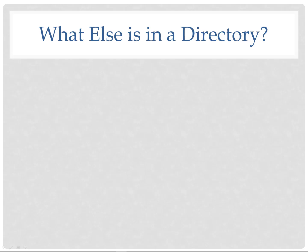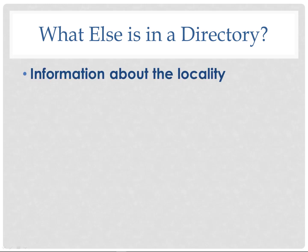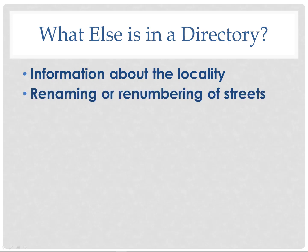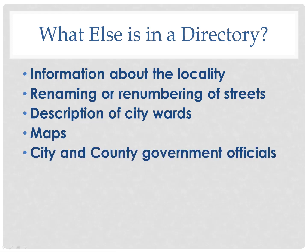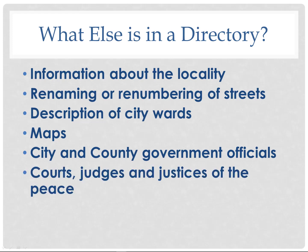What else is in a directory? There is certainly a lot of information about the locality — sometimes a renaming or renumbering of streets, descriptions of city wards, maps, city and government officials, courts, judges, justices of the peace, and current newspapers.